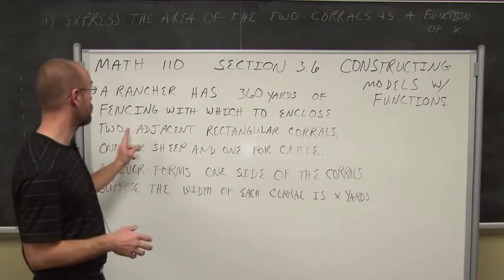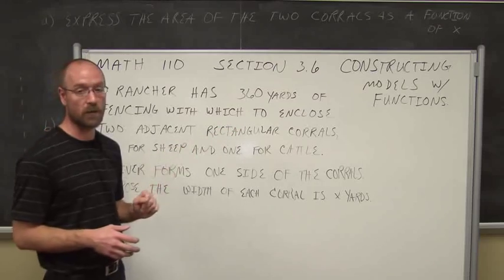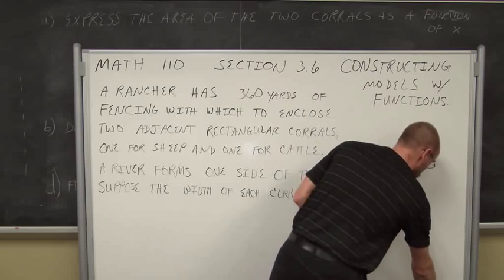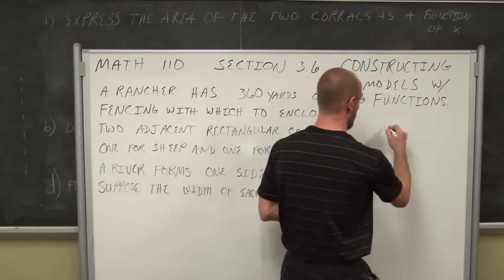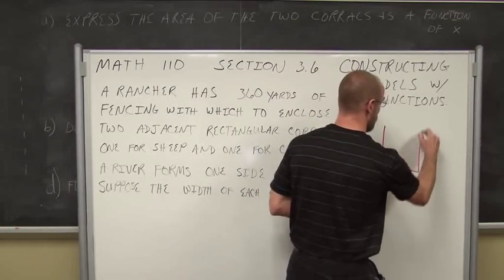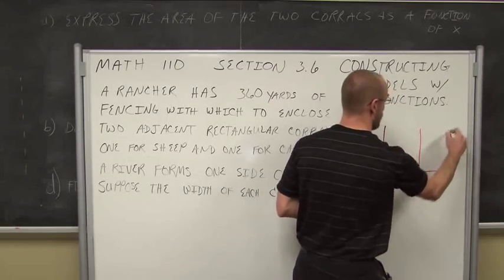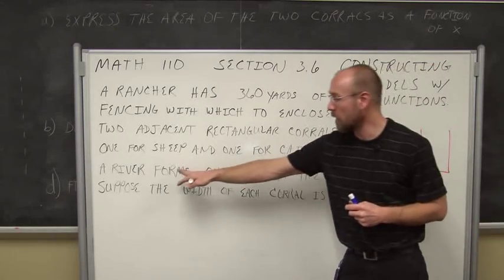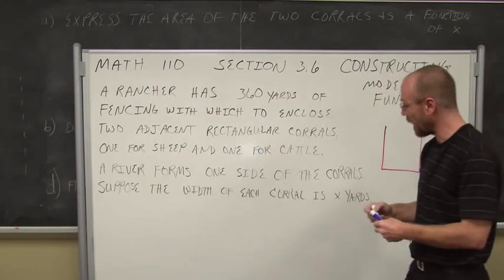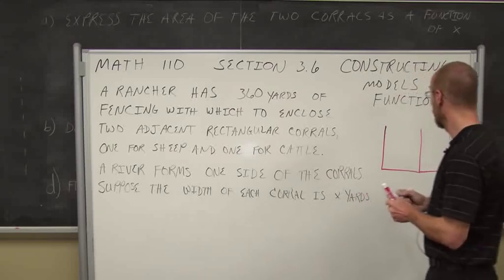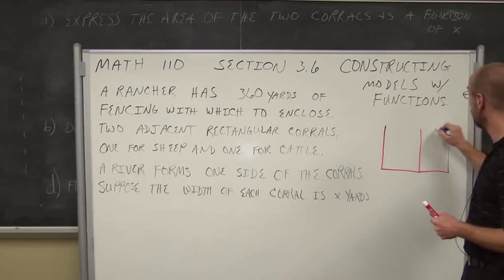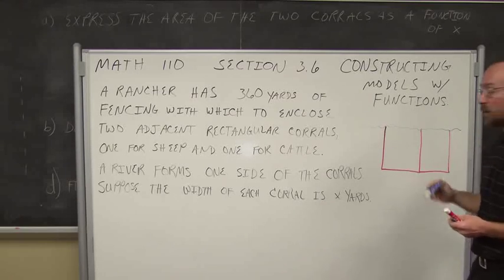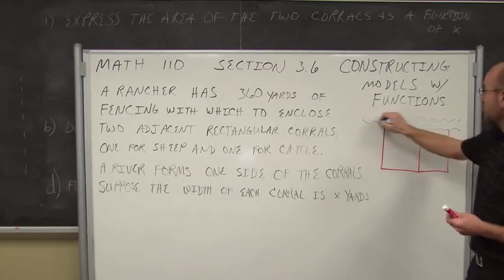He needs to enclose two adjacent rectangular corrals, so there's two corrals. I'm just going to start illustrating some of this information. I have two corrals and they're rectangular. I'm told that one's for sheep and one's for cattle. But a river forms one side of the corrals. So in my illustration here, this is the river that kind of shows this is bordering my corral.